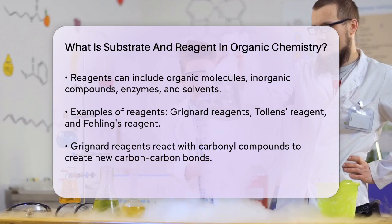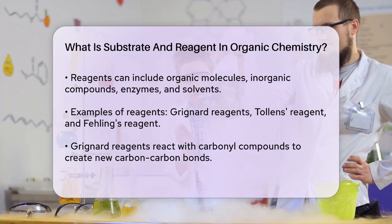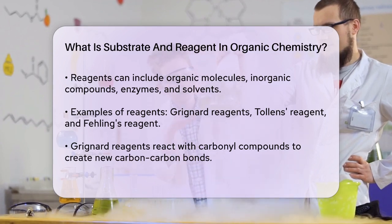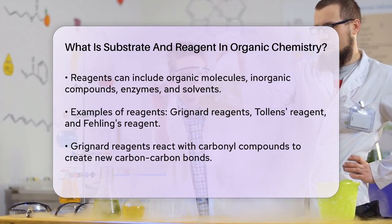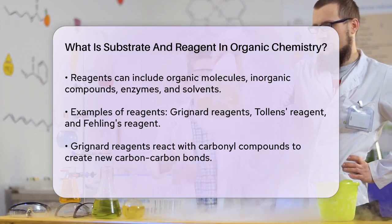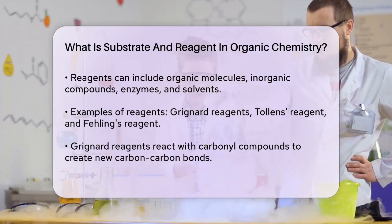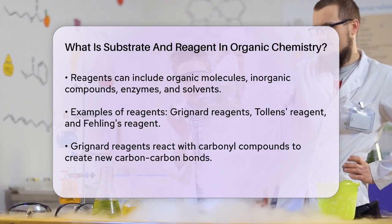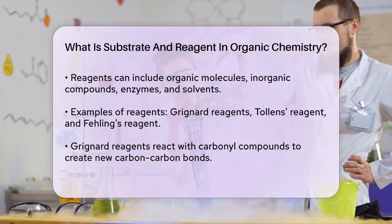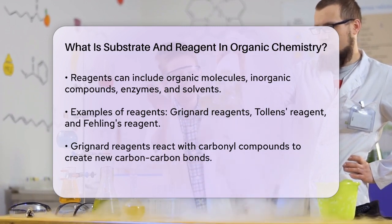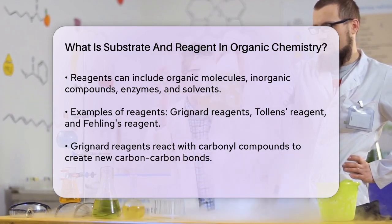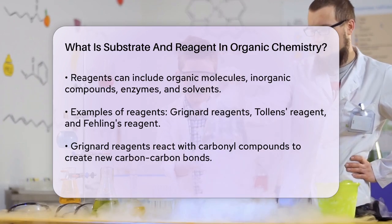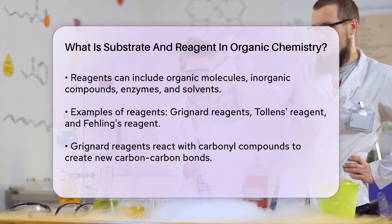For instance, Grignard reagents, Tollens' reagent, and Fehling's reagent are all examples of named reagents that are commonly used in various chemical reactions. To illustrate this, consider the use of a Grignard reagent in a reaction. A Grignard reagent is a type of reagent that reacts with carbonyl compounds to form new carbon-carbon bonds.